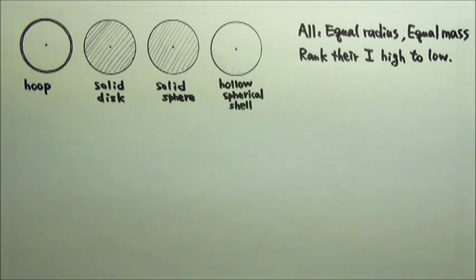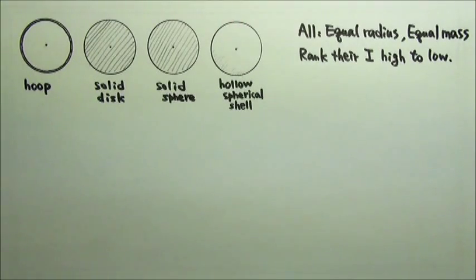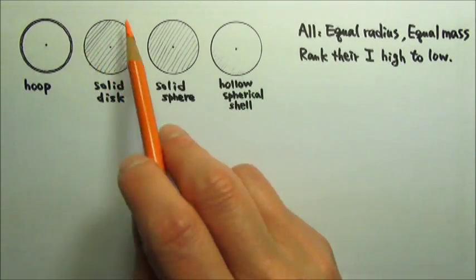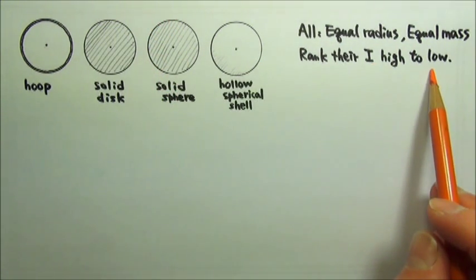Consider each object's rotational inertia about an axis that goes through its center of mass and is perpendicular to this page, which means each rotates like this about its center. Rank their rotational inertia from high to low.